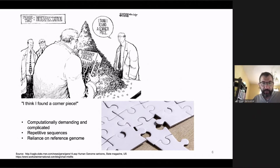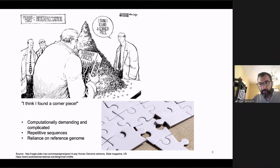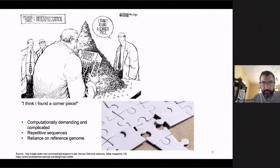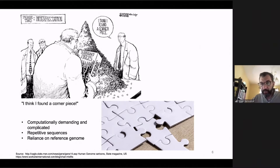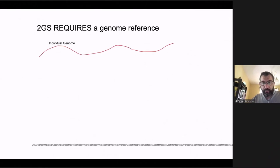Imagine a puzzle where pieces have the same shape and same color — it's really difficult to find where each piece belongs. The approach also relies on reference genomes, and the reference genome we use is not applicable to all ethnic groups, since it was mainly built on Caucasian genomes. When we study Asian genomes, we find many structural variants that are not pathogenic but simply polymorphic, belonging to a specific ethnic group.